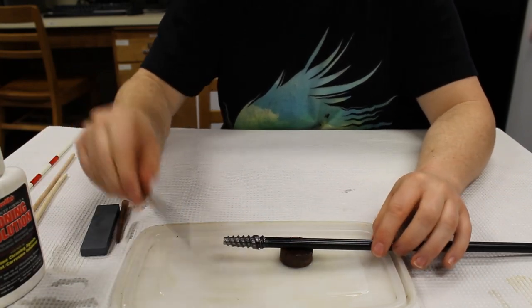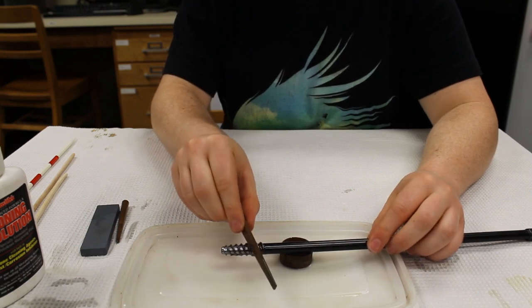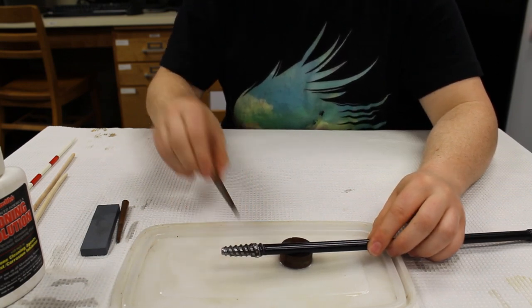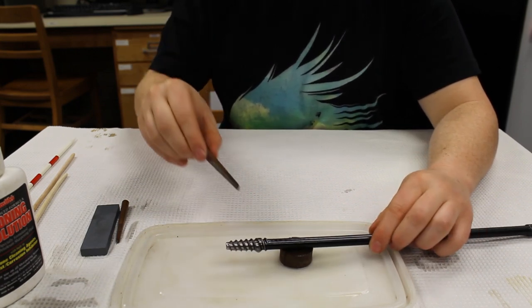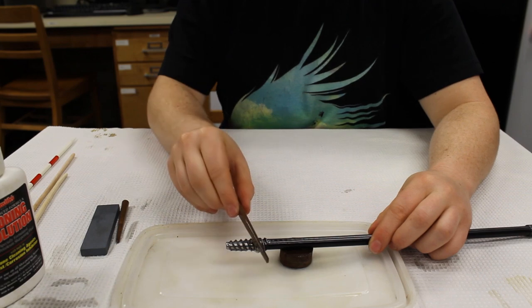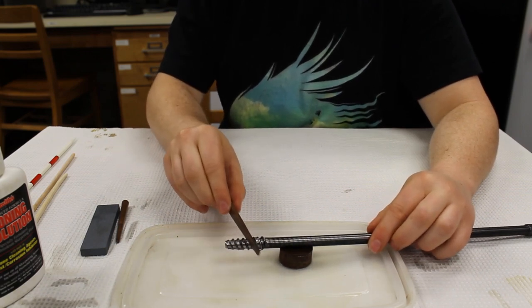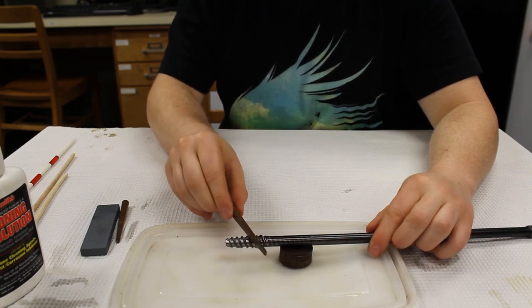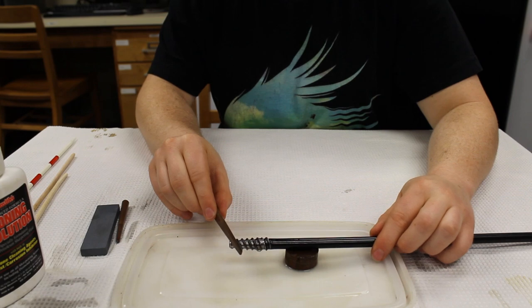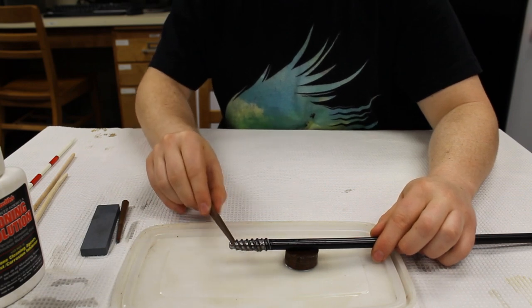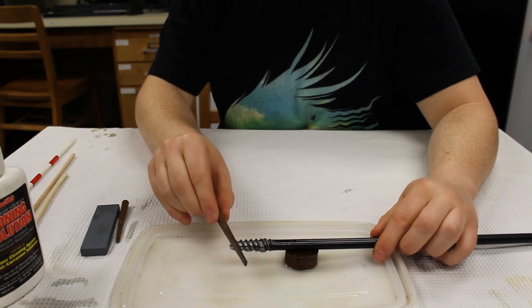So starting with this tapered stone, this will sharpen the threads. So I like to start towards the end. And you just make gentle movements towards yourself. And then rotate it slightly. And make sure you get both sides as well. So you just work your way along the thread until you get to the end. When you get to the end, you want to try and be your most careful because the very tip is the most delicate part of your borer.